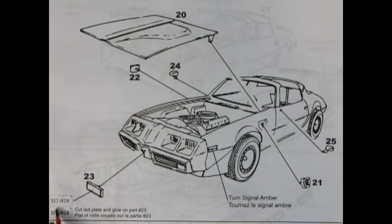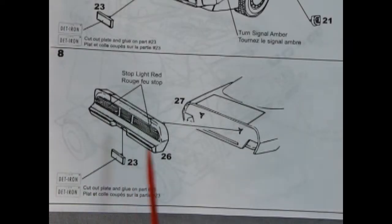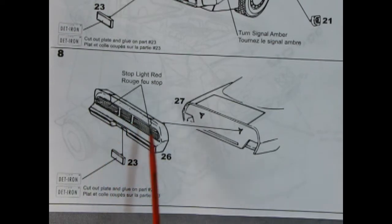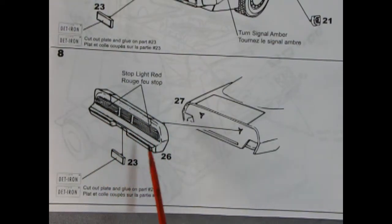And it says D-E-T Iron, which is short for Detroit Iron. And again, another car from Iowa, where Captain Kirk lives. Here we have our rear tail panel being glued into place. And it says to paint these stoplight red. However, the car being molded in red, you can almost just leave it. Well, maybe it'll give it a little bit of definition.